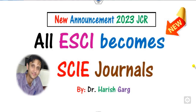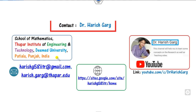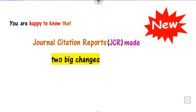Hello researchers, welcome to this new lecture. Today we will discuss the new announcements made by JCR 2023. There are two announcements made by the Journal Citation Reports. The first one is that the old Emerging SCI journals are now called the SCI Index journals. That is a major announcement. I am Dr. Garg, working in the School of Mathematics, Thapar Institute, India.